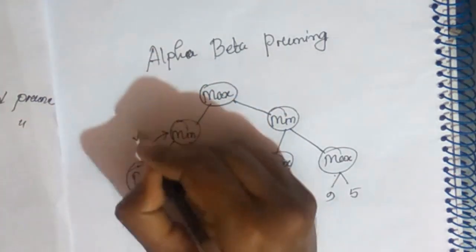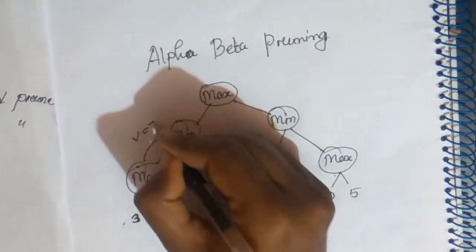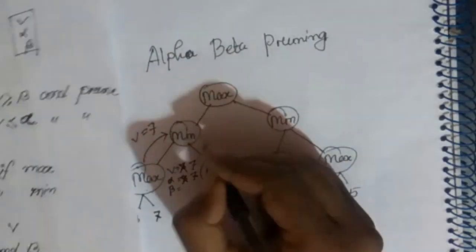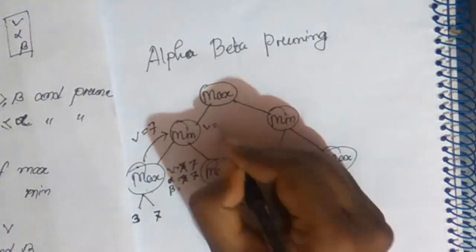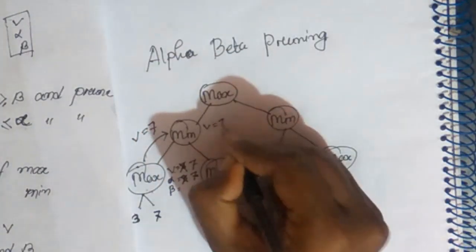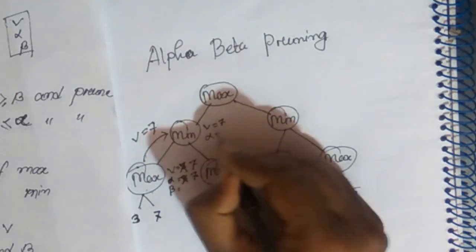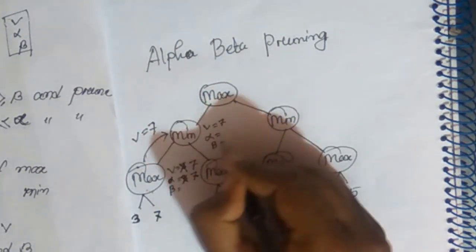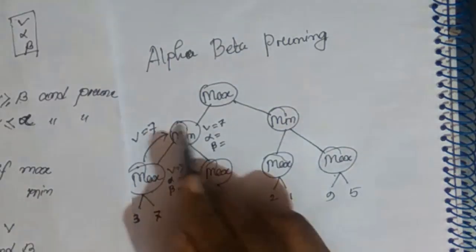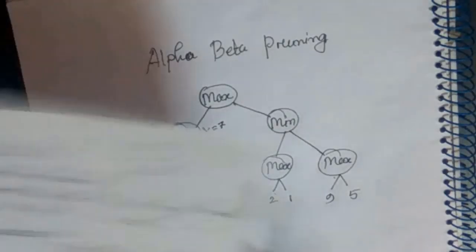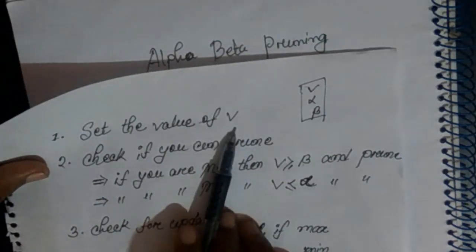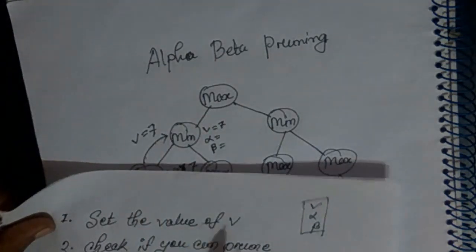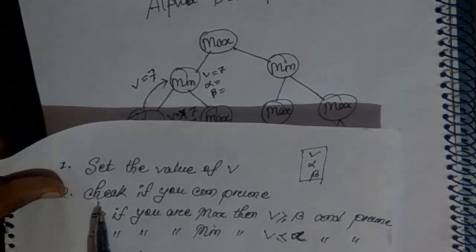VR value means 7. Now we have to show the VR value means 7. Alpha value means 7. The min node is set to VR value means 7.